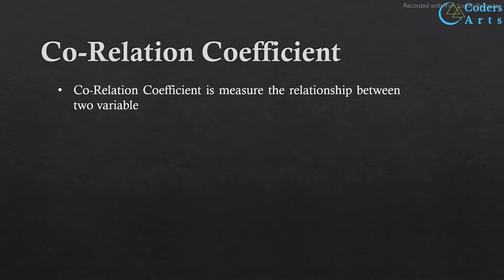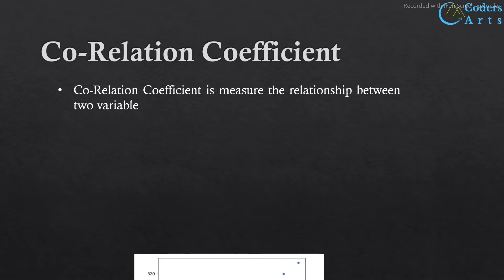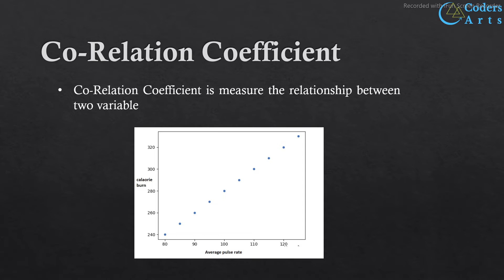In a positive relationship, the data tends to move together — when one variable increases, the other one increases as well. Here is the scatter plot of average pulse and calorie burn. In the scatter plot, as the average pulse rate increases, the calorie burn also increases.